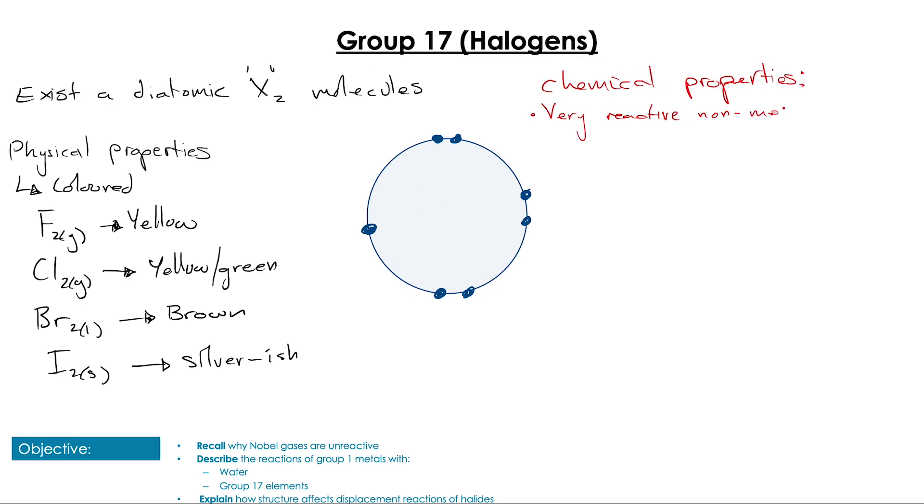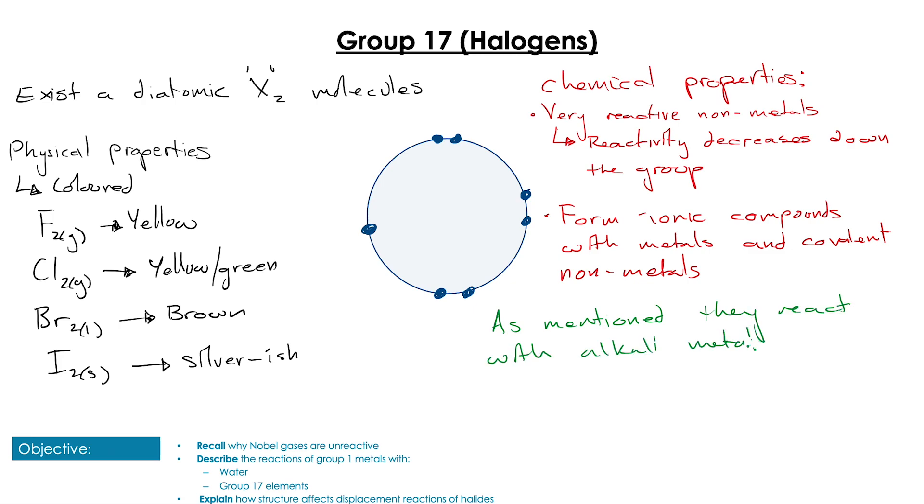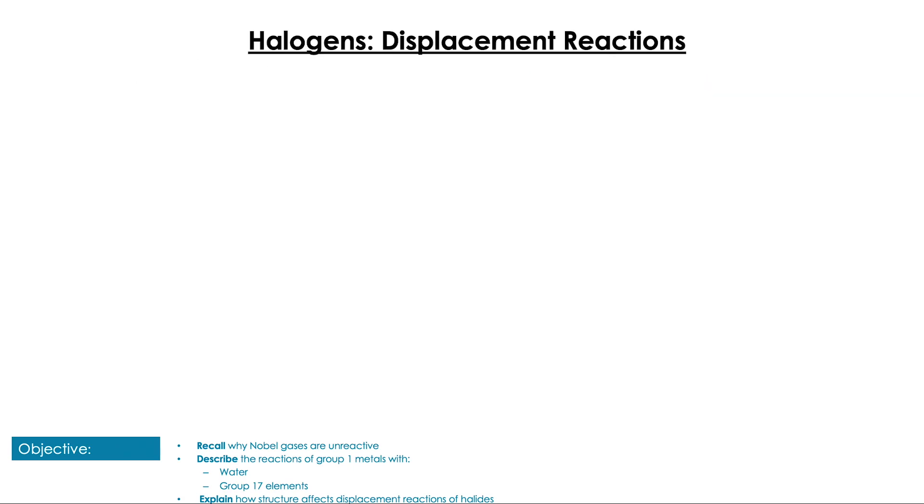In terms of their chemical properties, these are very reactive non-metals, but unlike the alkali metals, their reactivity decreases down the group. All of them react with metals to form ionic compounds, such as the reaction of Group 1 alkali metals with Group 17 halogens to form metal halide salts.